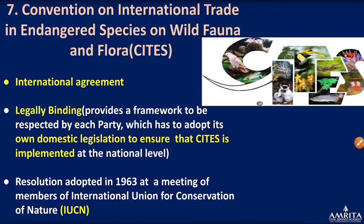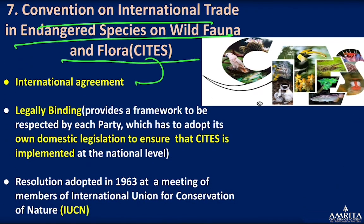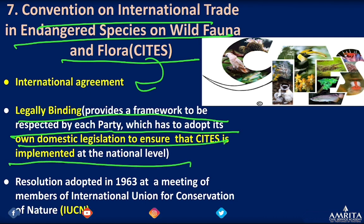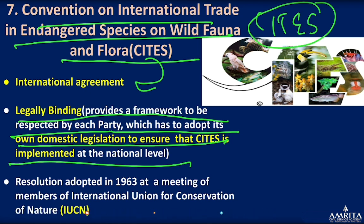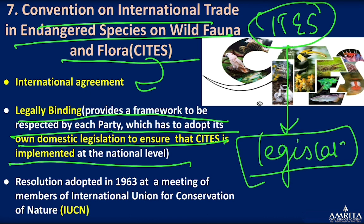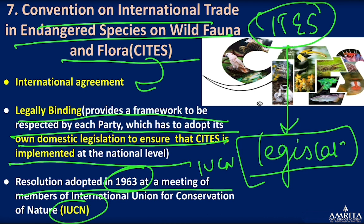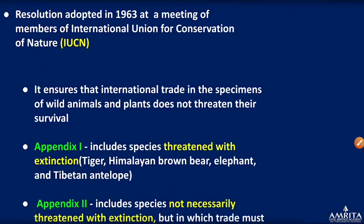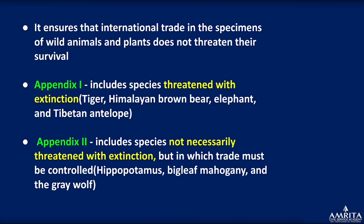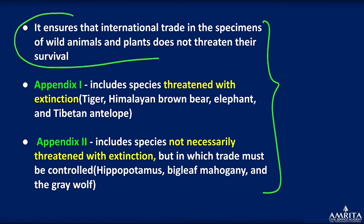CITES — the Convention on International Trade in Endangered Species — is an international agreement that is legally binding. It provides a framework to be respected by each party, which has to adopt its own domestic legislation to ensure CITES is implemented. It was adopted in 1963 at a meeting of the IUCN. The mission of CITES is to ensure that international trade in specimens of wild animals and plants does not threaten their survival.